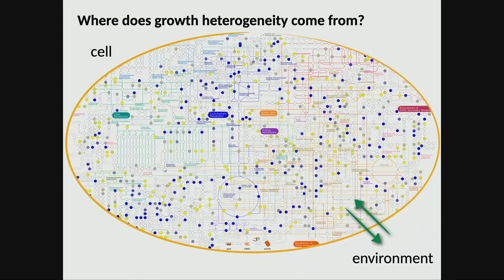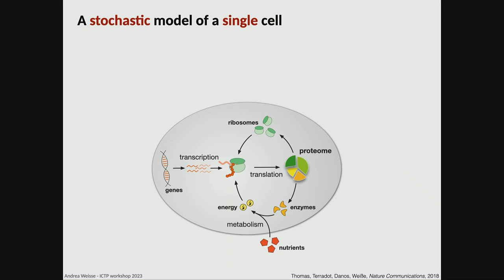To study how variation in components of this complex system leads to variation in growth rate, the same framework is revisited in a stochastic setting — every reaction is treated as a stochastic reaction. This allows not imposing stochasticity phenomenologically but rather predicting its emergent effects from first principles.